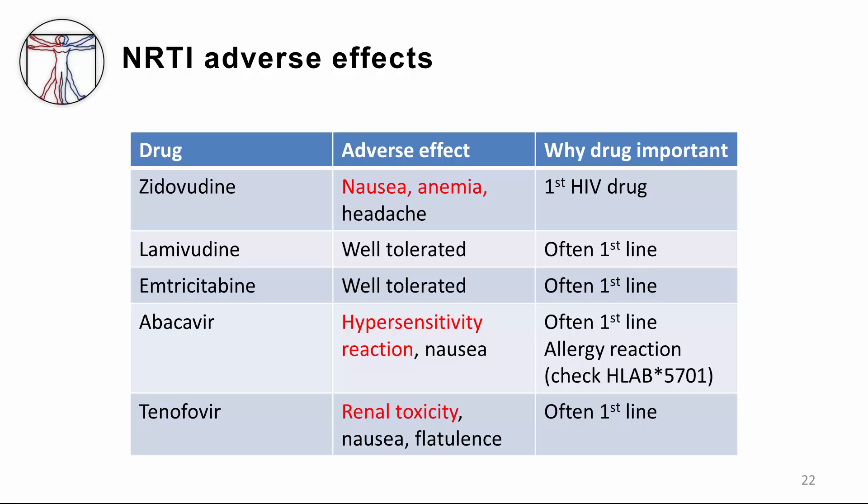Abacavir is known for a hypersensitivity reaction that can be life-threatening. One of the few pharmacogenomic tests incorporated into regular clinical practice as standard of care is the HLA-B*5701 test for abacavir hypersensitivity. Before starting abacavir, we definitely want to check an HLA-B*5701 test. Finally, tenofovir — one component of Truvada — has been famous recently for its use in PrEP or pre-exposure prophylaxis, and is known for its renal toxicity. Tenofovir is often used in a first-line regimen as well.